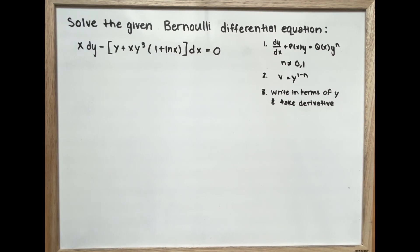Solve the given Bernoulli differential equation: x multiplied by dy minus y plus x multiplied by y to the power of 3, bracket 1 plus ln x, bracket, all multiplied by dx is equal to 0.